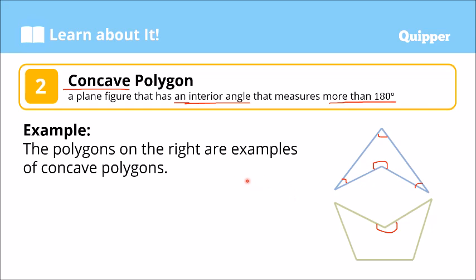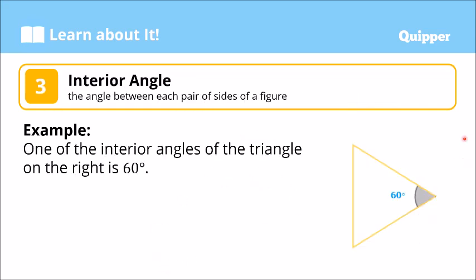Convex and concave polygon. Now, let's review the interior angle. When we say interior angle, that's the angle between each pair of sides of a figure that is inside the polygon. So, we have here this angle right here is an interior angle, this is also an interior angle, and another interior angle.